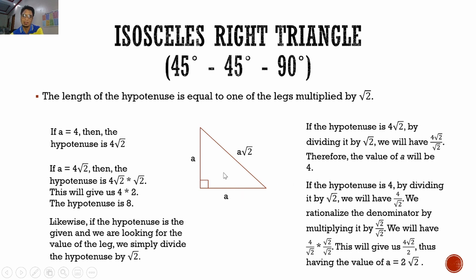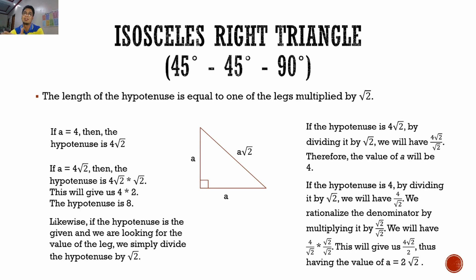Both legs are equal here because we have an isosceles right triangle. If you have questions, please comment in the comment section. Let us know where you're having difficulty with the topic or if our explanation is unclear — we will try to improve how we deliver it.